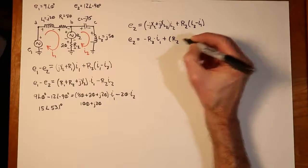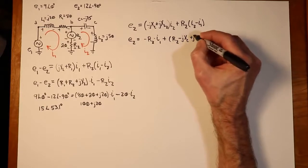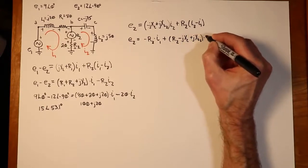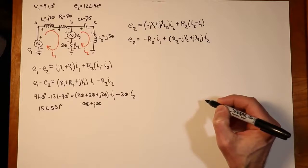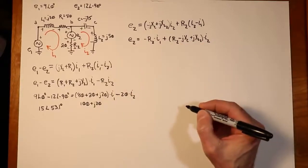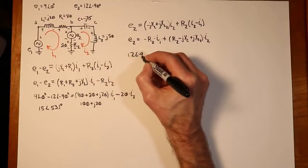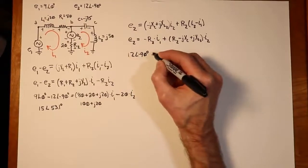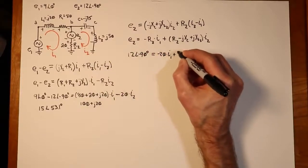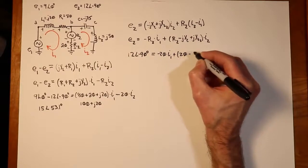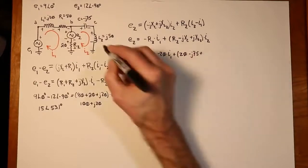Put our real first here. And then, minus J X of C, plus J X of L number 2. And all that is multiplied by I2. Now, we can plug our values in and simplify it a little bit. So the E2 is 12 at an angle of minus 90. The R2 is 20 ohms. And we'll just repeat that over here. The minus J X of C is 75. The minus J X of L number 2 is J50.